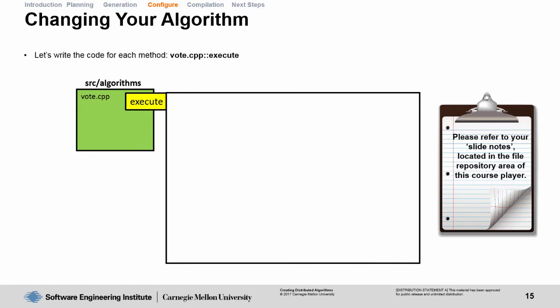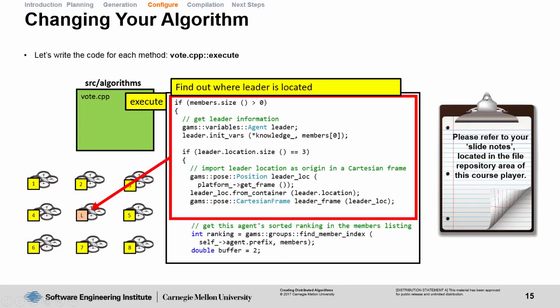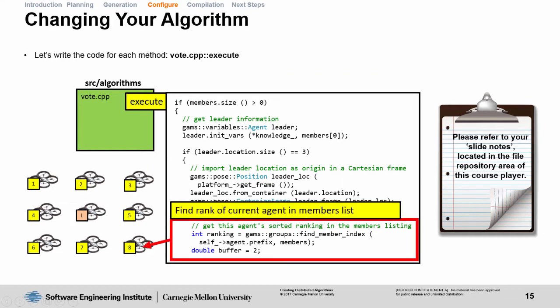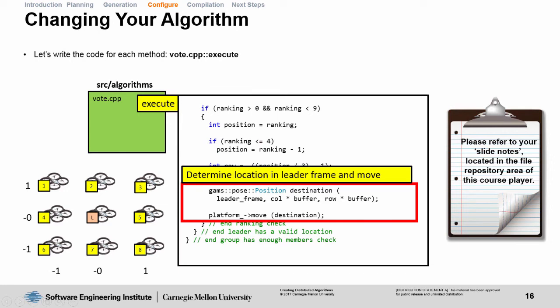Next, we're going to implement the execute method. In the execute method, we're going to perform the actual movements that put us around the leader. First things first, we find out where the leader is located. Then, we figure out what our rank is in the members listing. Next, we're going to determine the row and column in the formation based on our rank that we retrieved earlier. As an example, if your ranking in the list is 2, then your position variable will be 1, and that will put you at row 1 and column 0 of the formation that you can see to the left. Last, we determine our future location in the leader frame, and we move to that location. Believe it or not, that's all you have to implement to have your own vote algorithm.